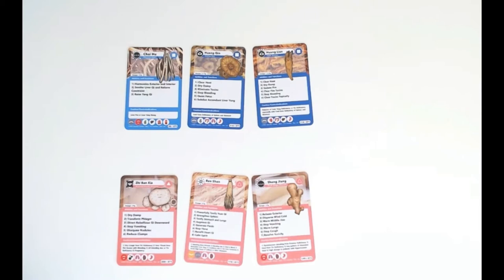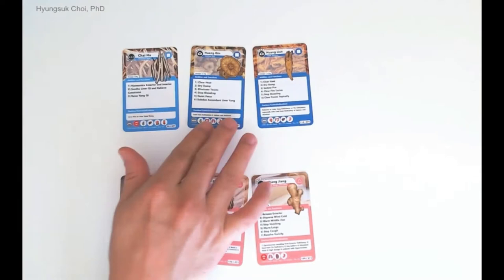Hello everyone, Dr. Cho Isen here. Welcome to my formula class. Today we will talk about Xiao Chai Hu Tang family. There are many variations from Xiao Chai Hu Tang. When we understand Xiao Chai Hu Tang, there are two different sides of herbs. First one is Chai Hu, Huang Chin, and Huang Nian.